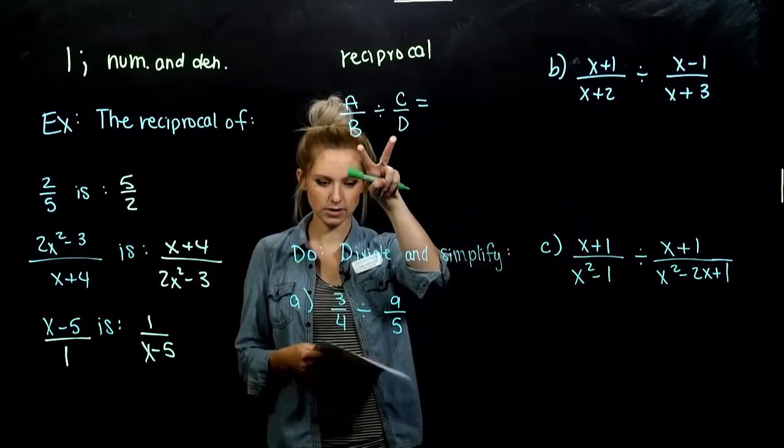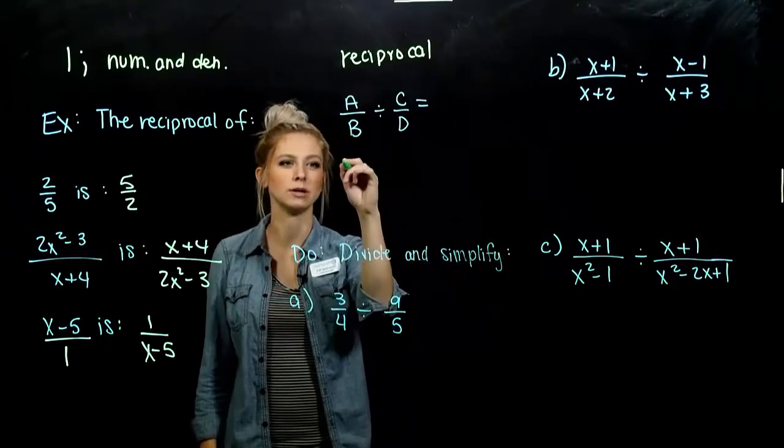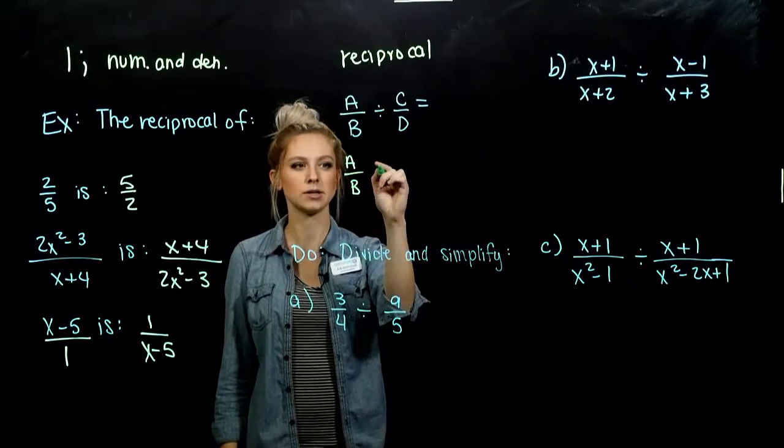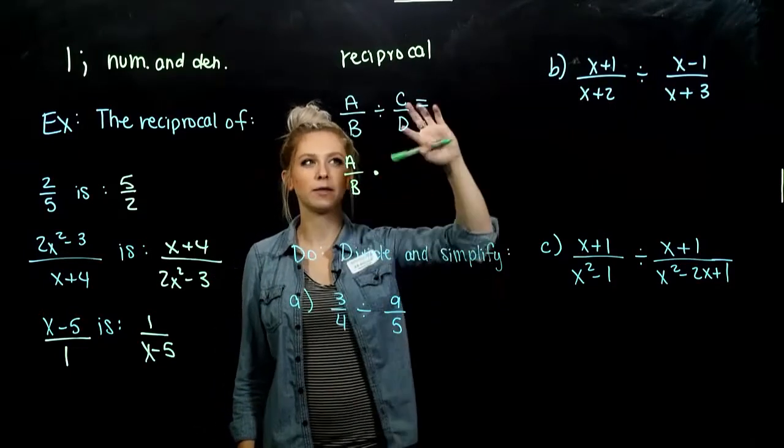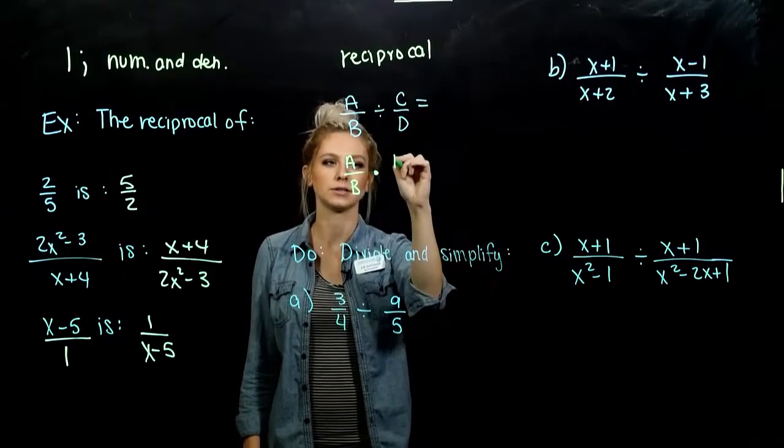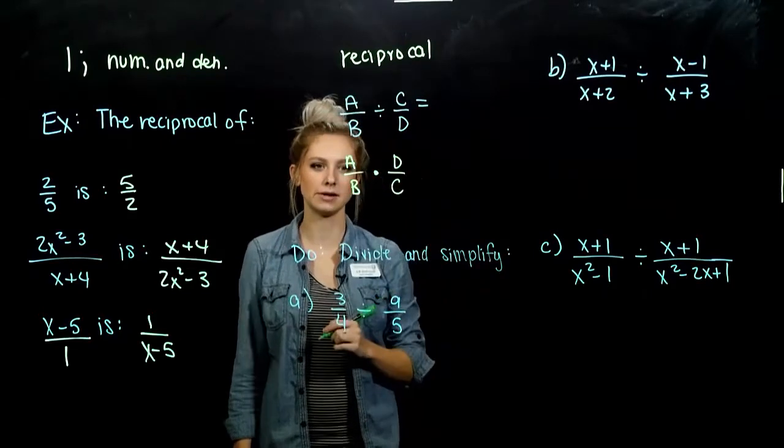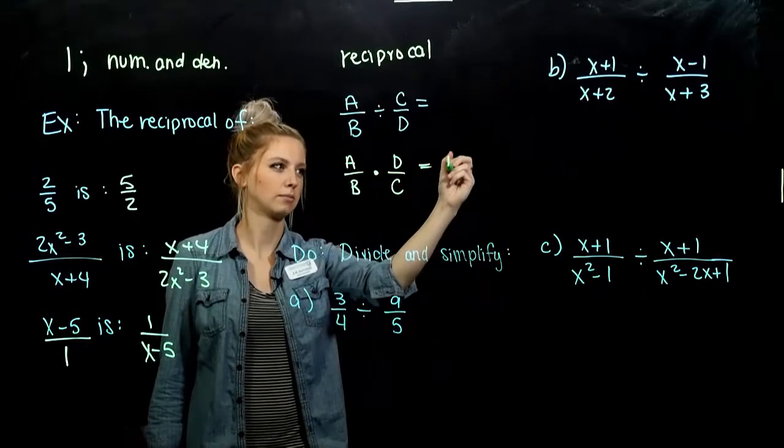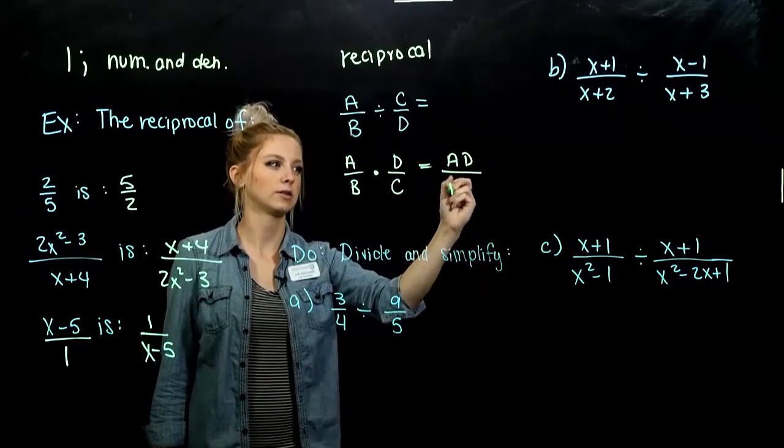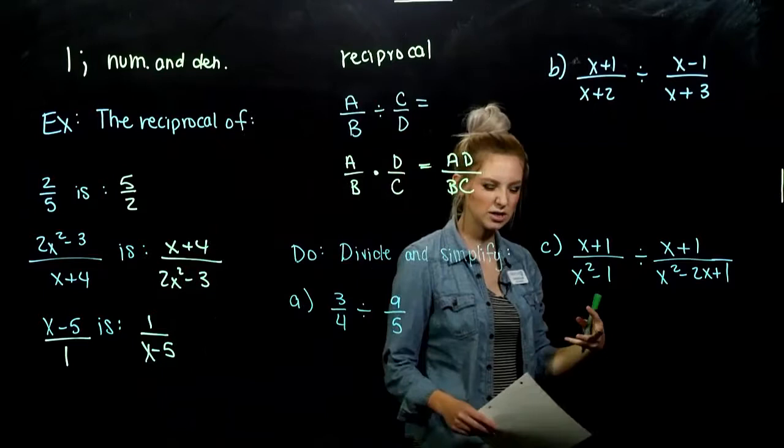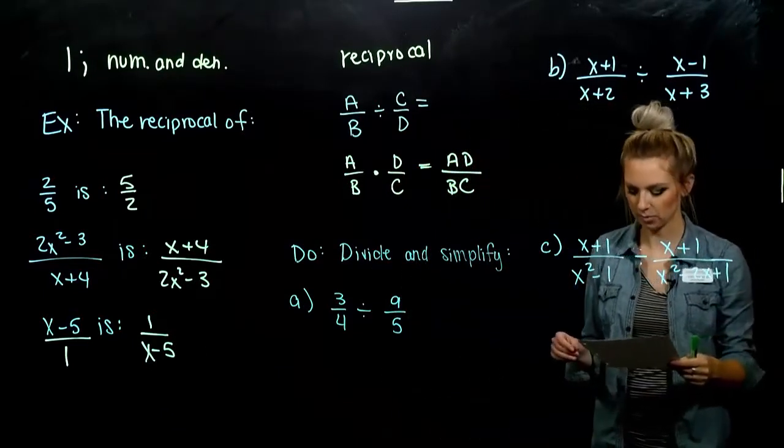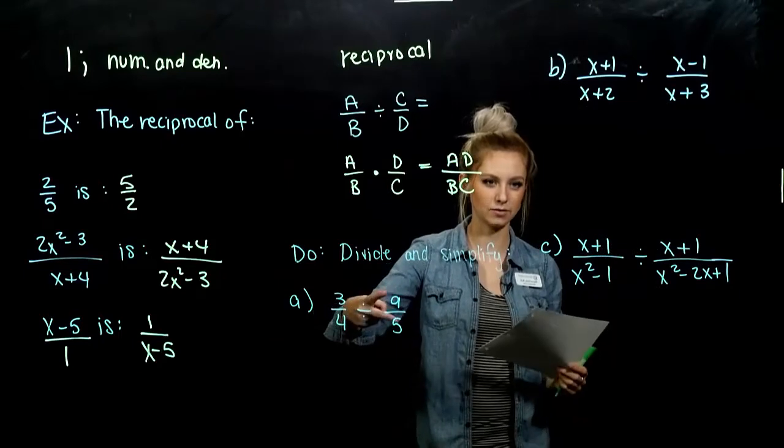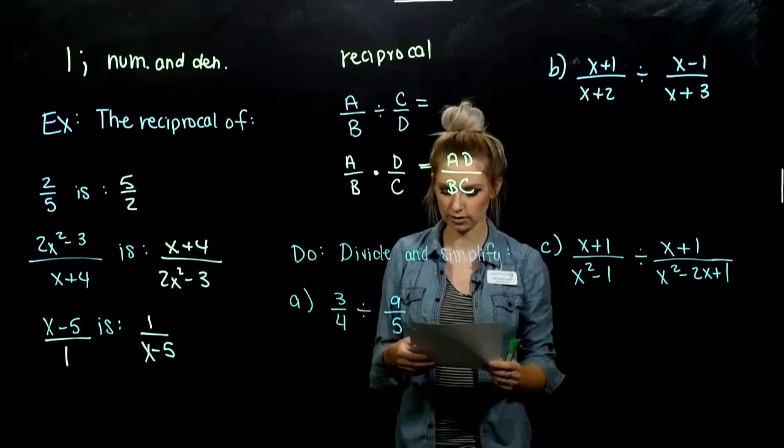But just to hone in on that, if I have this relationship, what holds true? I can take the first one exactly how it is. That never changes. And I can multiply by the reciprocal of the second one. So d over c. And we know how to handle this case. We just go straight across the top and straight across the bottom.